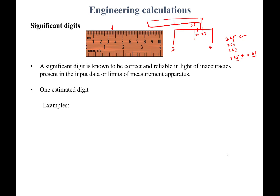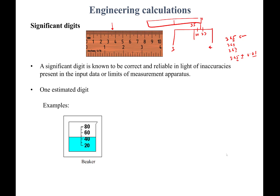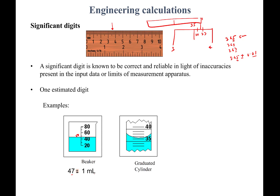For a beaker, if the fluid level is between 40 and 50 mL, we might say 47 or 48 mL — the last digit is estimated, so the error is ±1 mL. For a graduated cylinder with a level between 36 and 37, we could say 36.5 mL ±0.1 mL, since the last digit is in the tenths place. For a burette with markings between 20.3 and 20.4, we could say 20.38 mL ±0.01 mL.